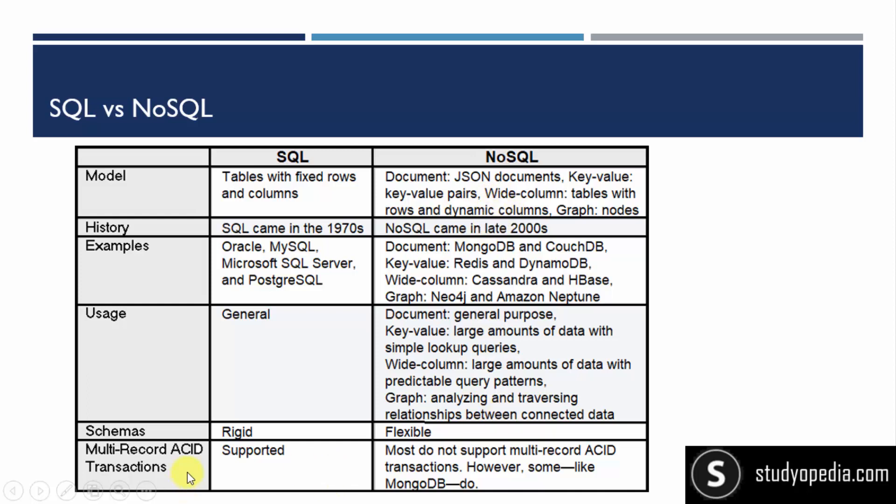Multi-record ACID transactions are supported by SQL. NoSQL generally doesn't support it, but MongoDB still does. ACID is an acronym for atomicity, consistency, isolation, and durability. These are database operation properties, also known as ACID transactions.